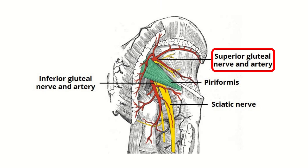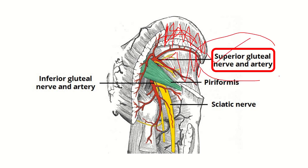We need to find the nerve supply of the gluteus medius muscle. Here we can see the gluteus medius muscle and the gluteus minimus muscle. A nerve lies between the gluteus medius and minimus — this nerve is the superior gluteal nerve.